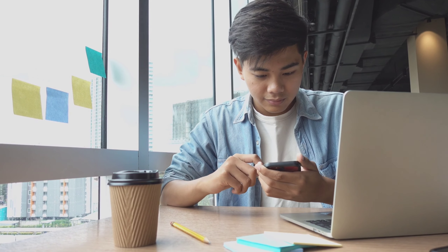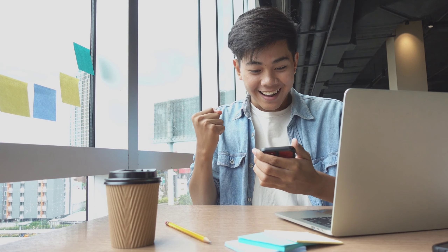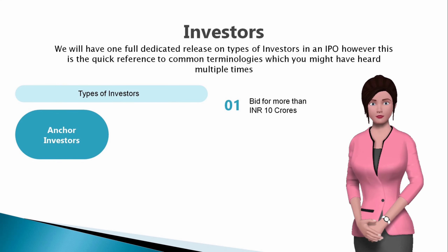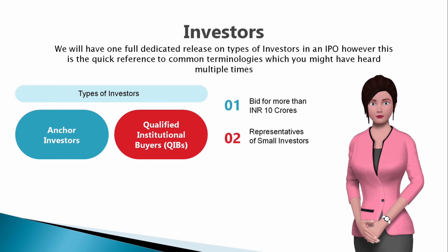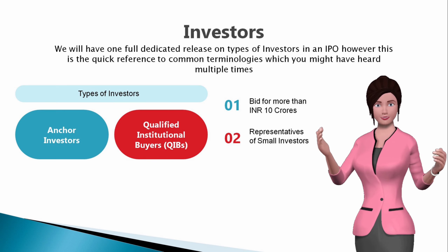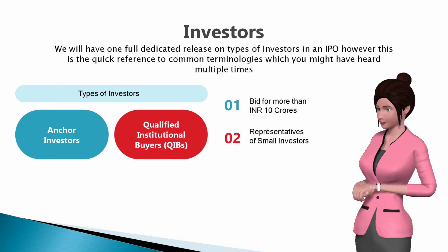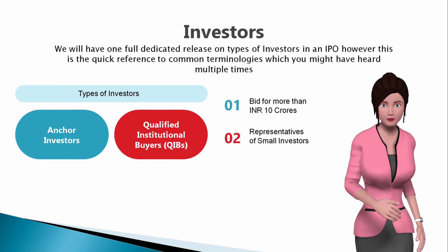Now we will discuss the most crucial and interesting party to the transaction. We have grown up listening that the client is the king, and in this case investors are equivalent. We will have one full dedicated release on types of investors in an IPO, however this is a quick reference to common terminologies you might have heard multiple times. An anchor investor refers to a qualified institutional buyer, QIB, making an application for a value of Rupees 10 crores or more. Qualified institutional buyers, QIBs, are mostly representatives of small investors who invest through mutual funds, ULIP schemes of insurance companies, and pension schemes.